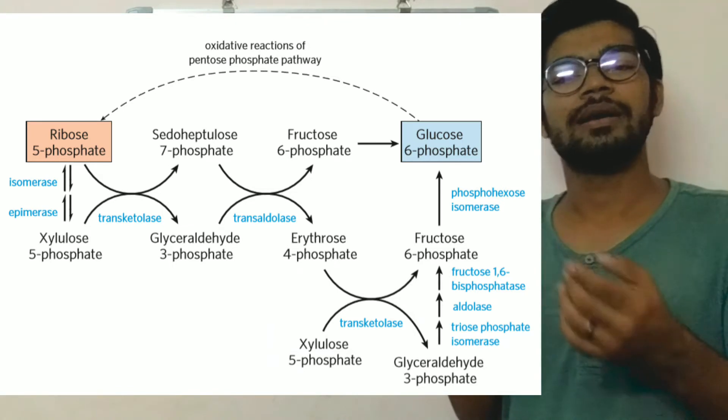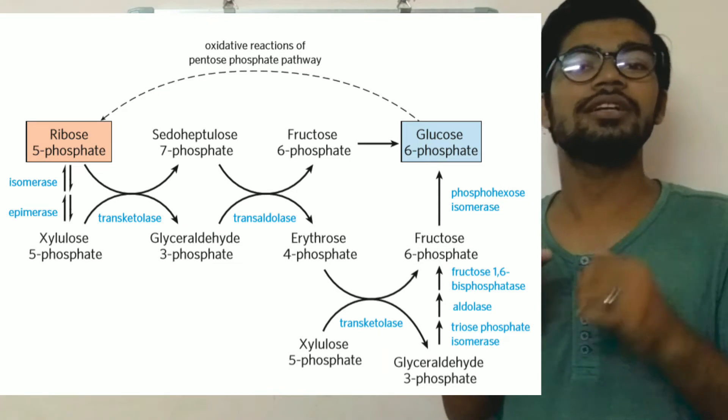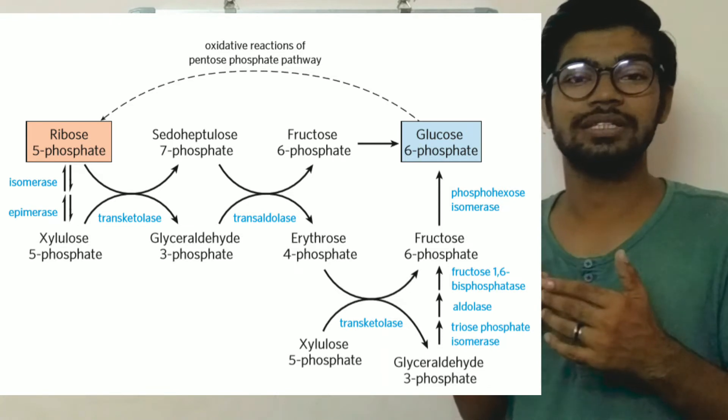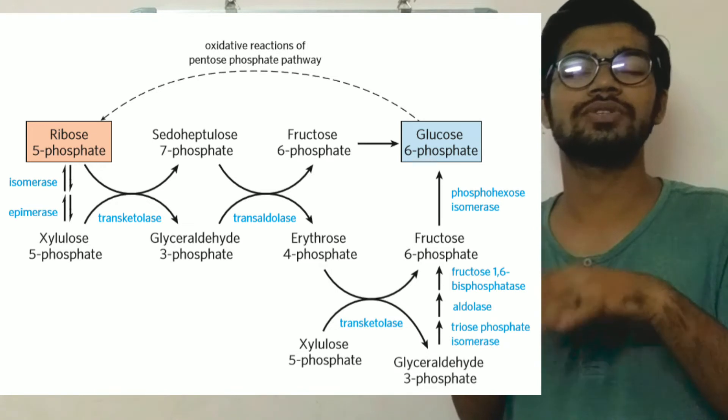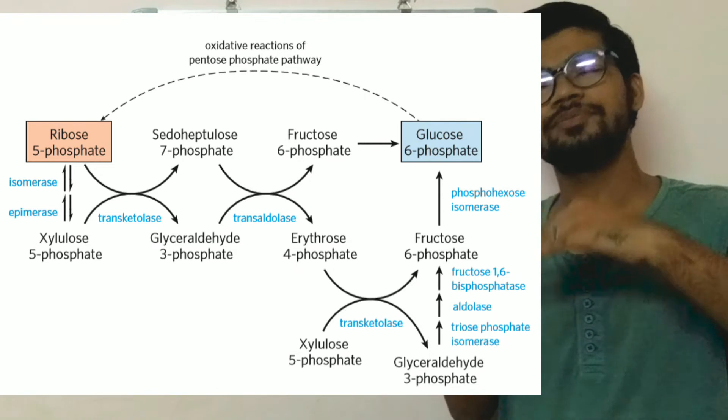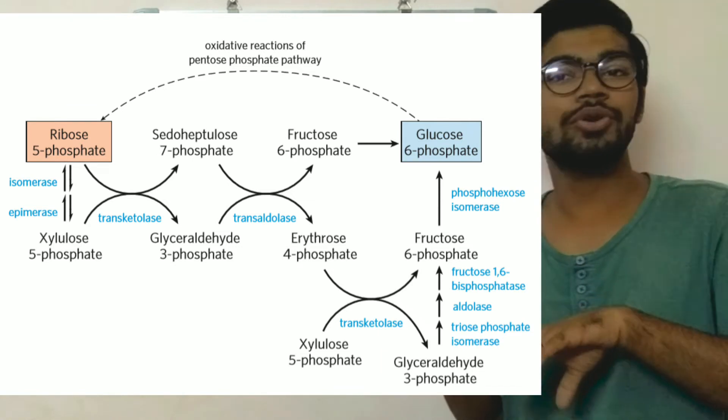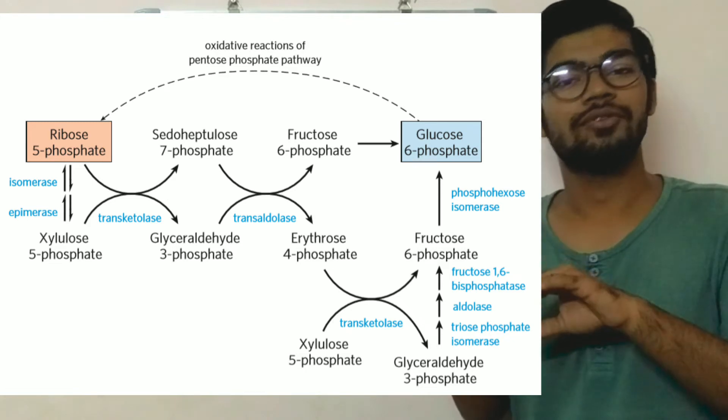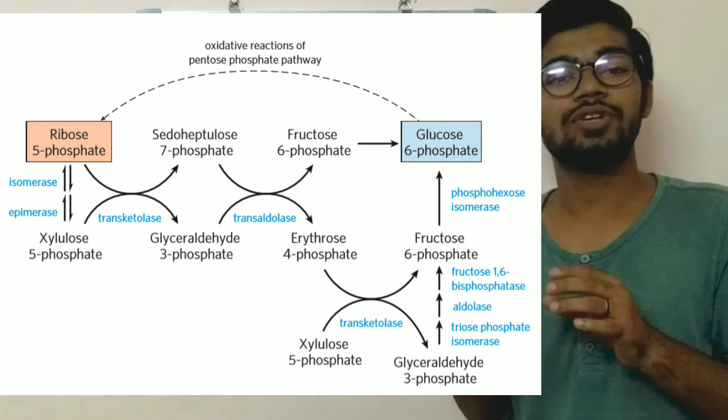The remaining erythrose-4-phosphate acts with xylulose-5-phosphate with the enzyme transketolase. This forms glyceraldehyde-3-phosphate and fructose-6-phosphate again. The glyceraldehyde-3-phosphate can be used in various ways in glycolysis or in gluconeogenesis to form glucose-6-phosphate, and the fructose-6-phosphate which is formed is converted into glucose-6-phosphate.